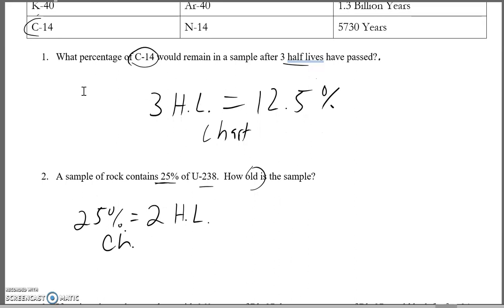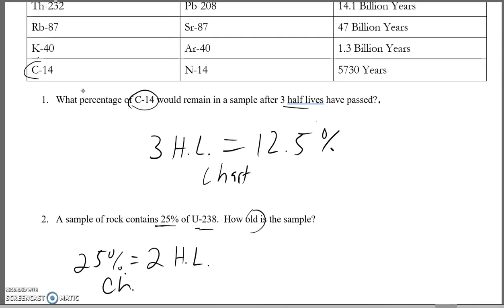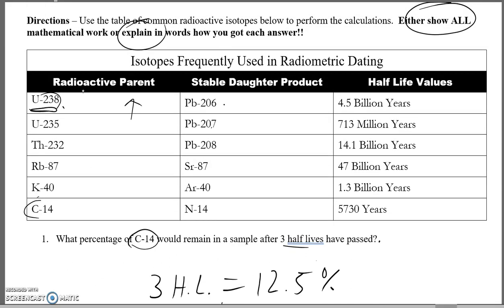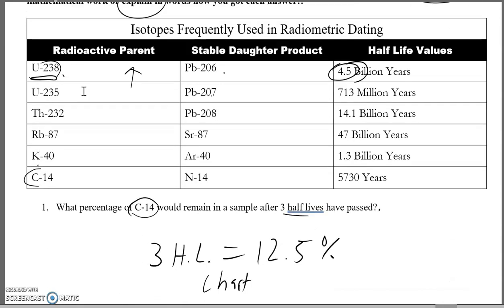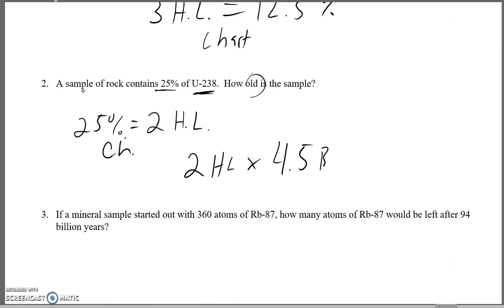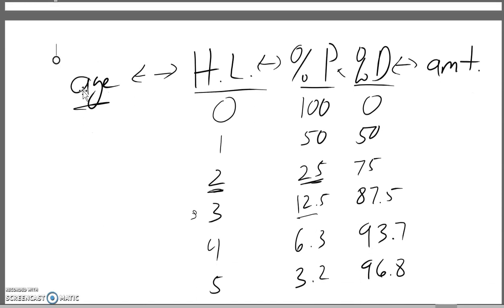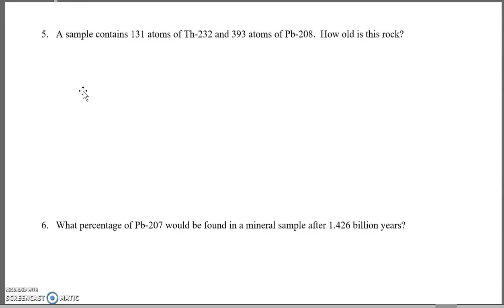Now the next step: if it's been through two half-lives, how old is it? We know that for uranium-238, one half-life is 4.5 billion years. We've gone through two half-lives, so we multiply: 2 half-lives × 4.5 billion years = 9 billion years. We were given the percentage of the parent, used the chart to find the number of half-lives, then multiplied by the length of each half-life to get the total age.